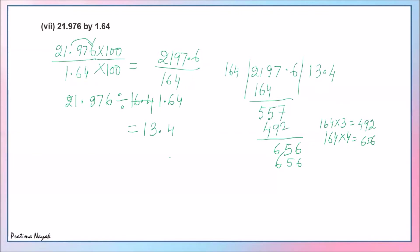The better method mentioned: first cancel both numerator and denominator by 4 to get smaller numbers, which makes the division easier.